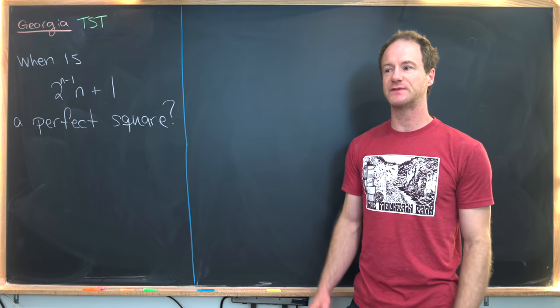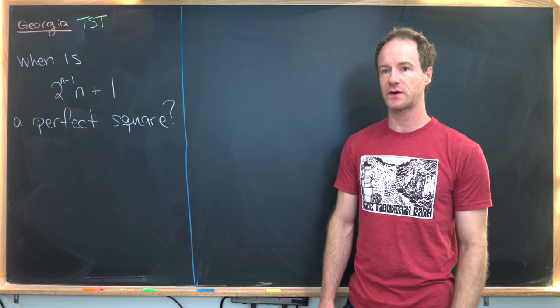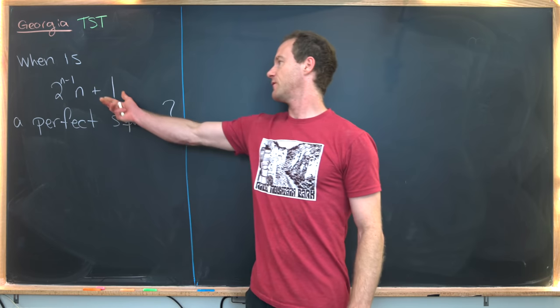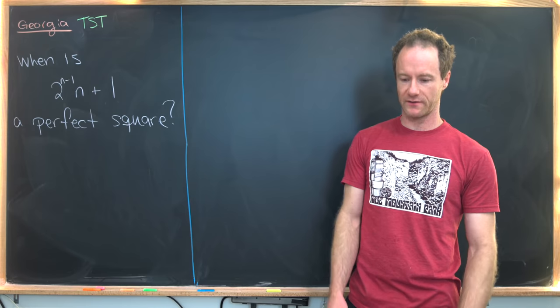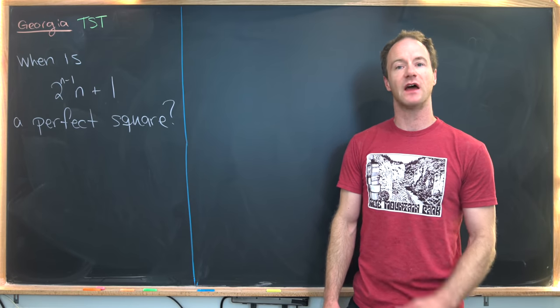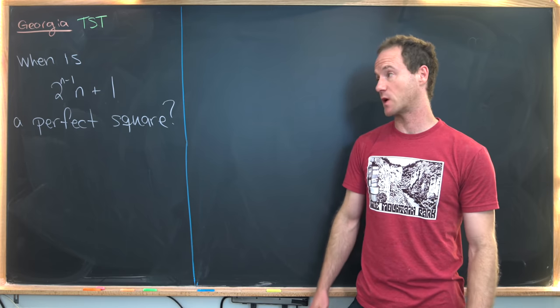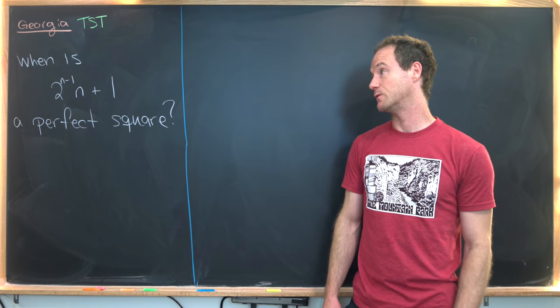There are a lot of these problems that ask when are objects of this form perfect squares. Whenever you've got a plus 1 as part of that object, you can be almost assured that you'll want to bring that 1 to the other side of the equation and then use the difference of squares formula. That's exactly what we'll do.